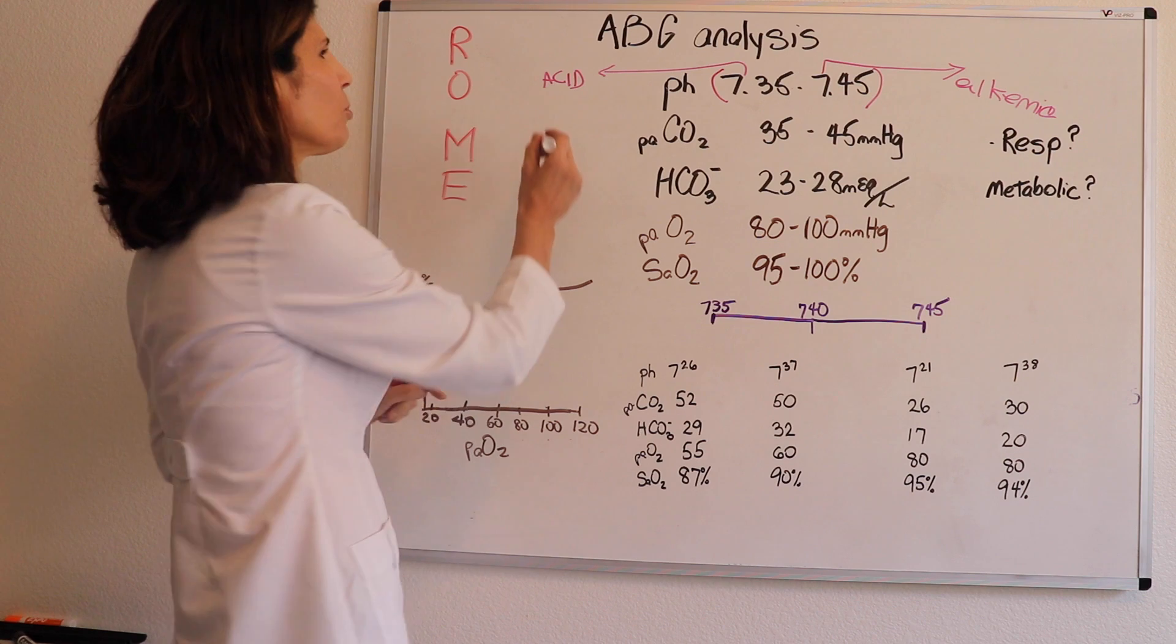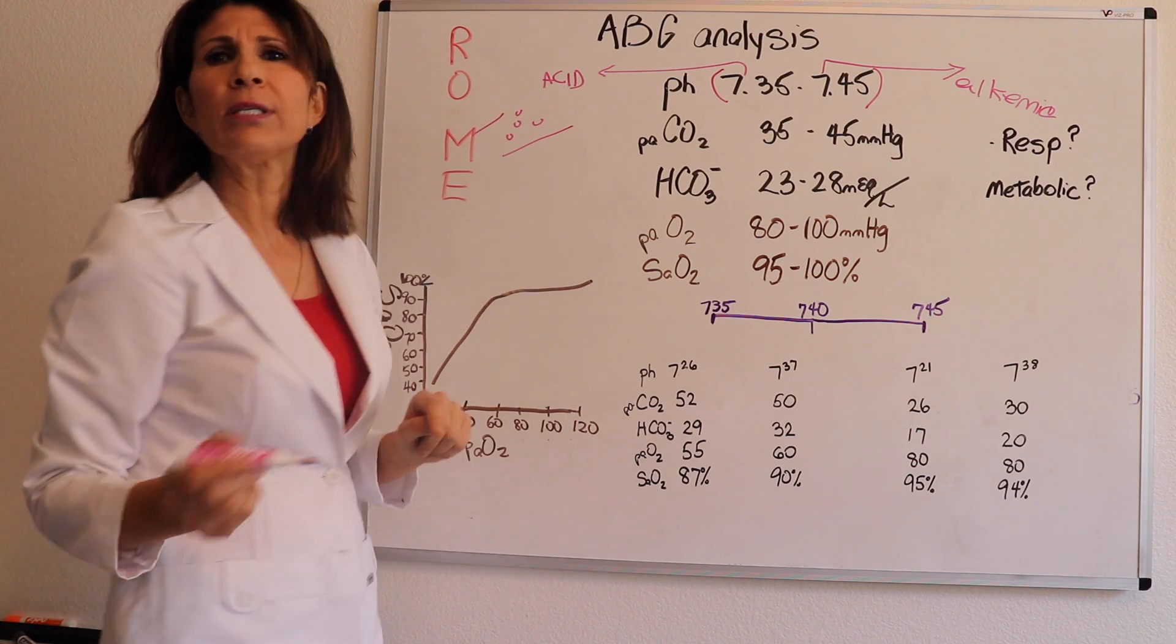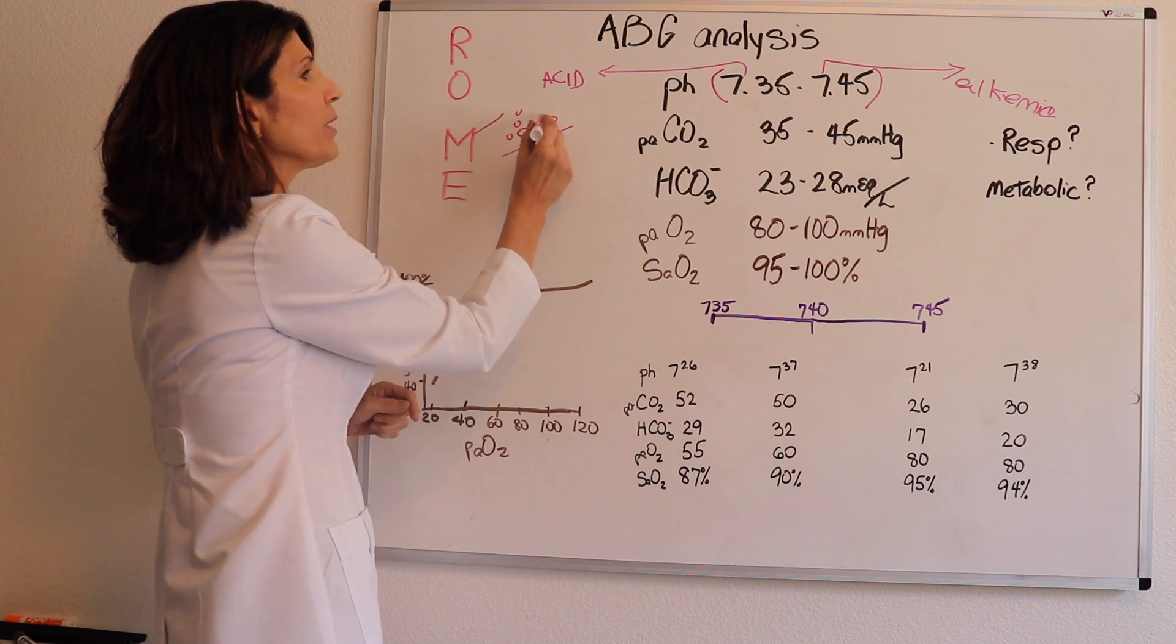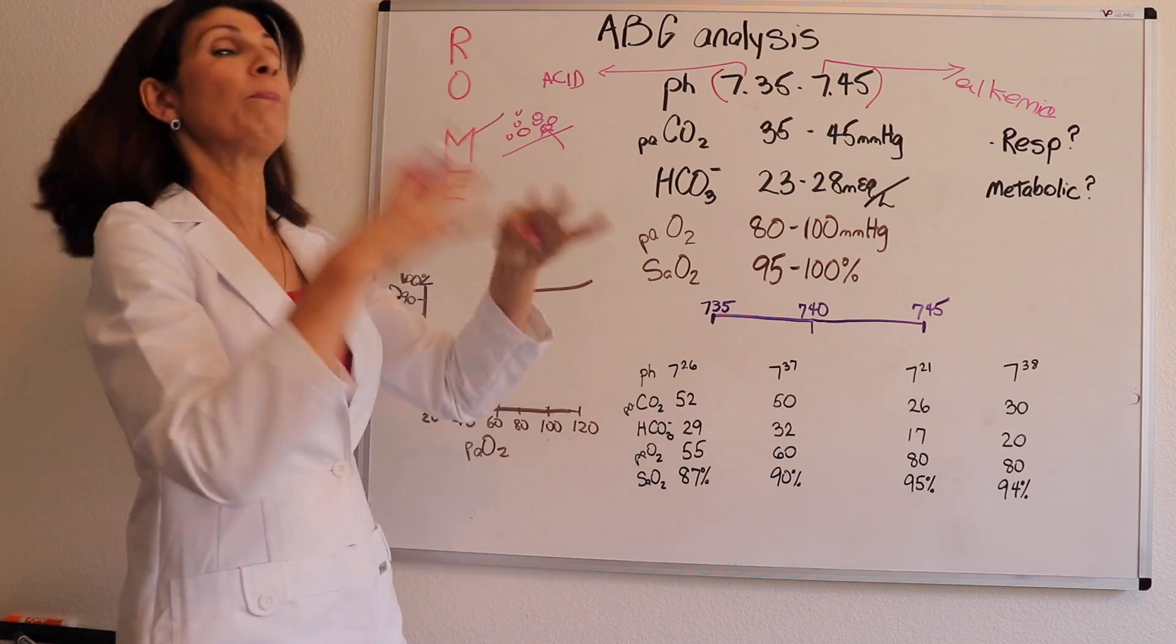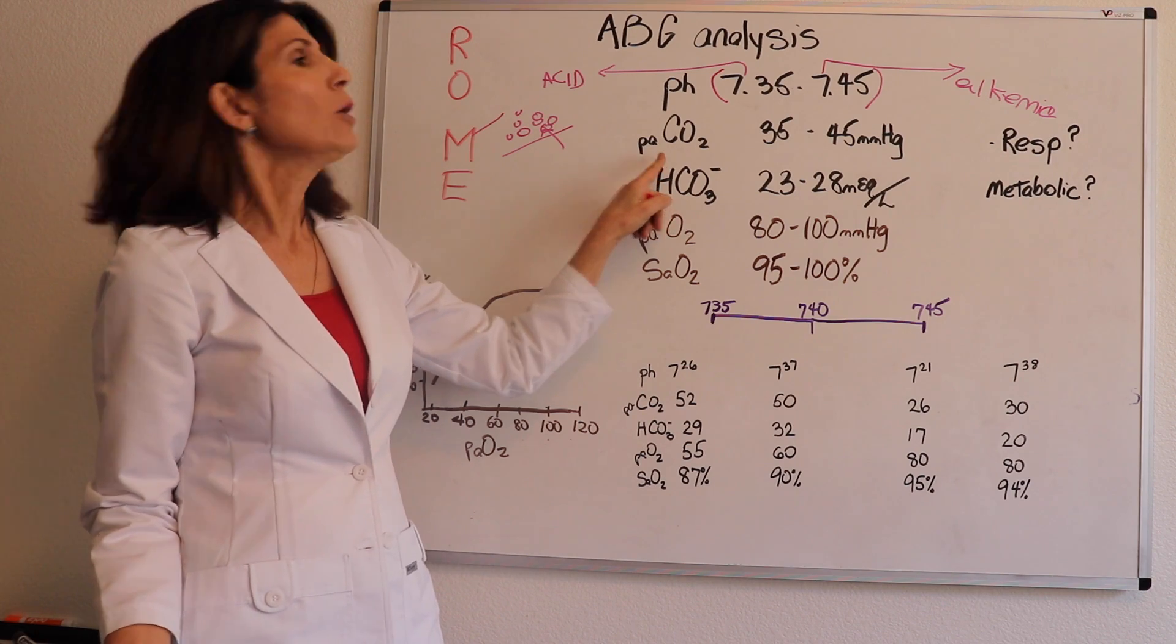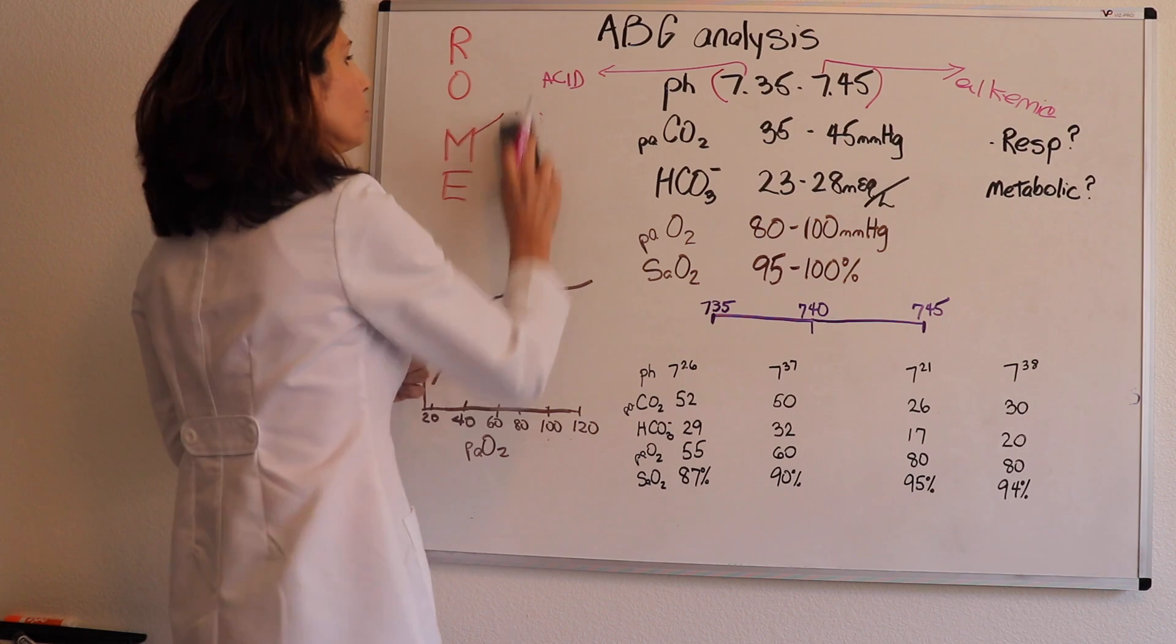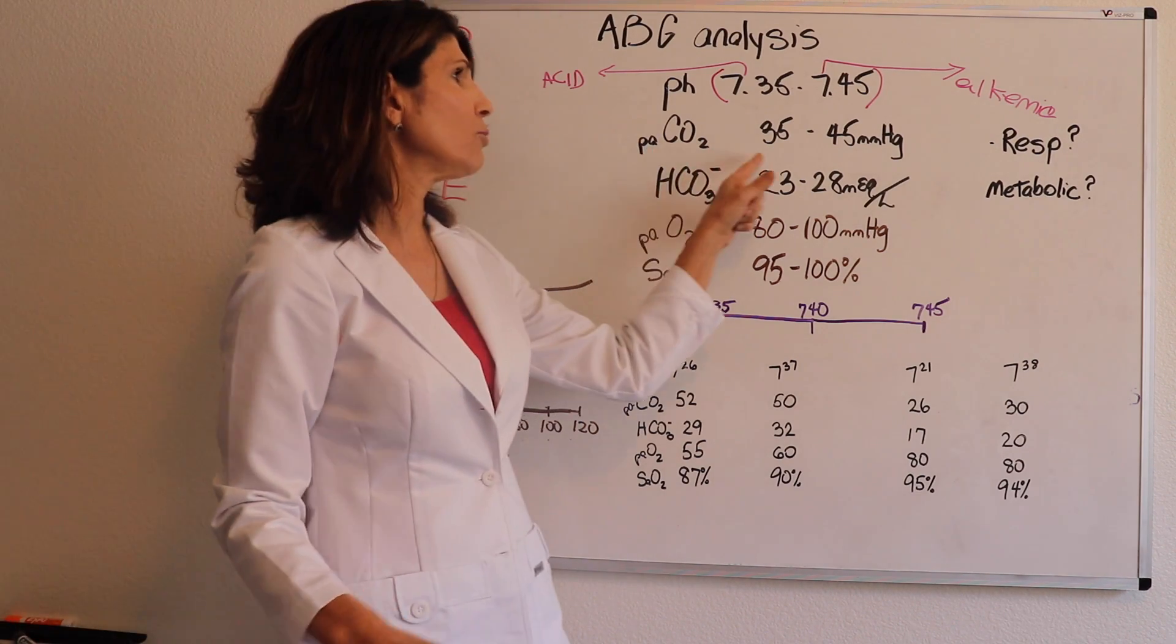Now, why is it a partial pressure? Because there's other gases in the arterial system and because there are other gases that comprise all the potential pressure there could be, that's a partial pressure. So that's all that means. You don't have to think about it again, just so you don't wonder what the little P stands for in front of the CO2 value.